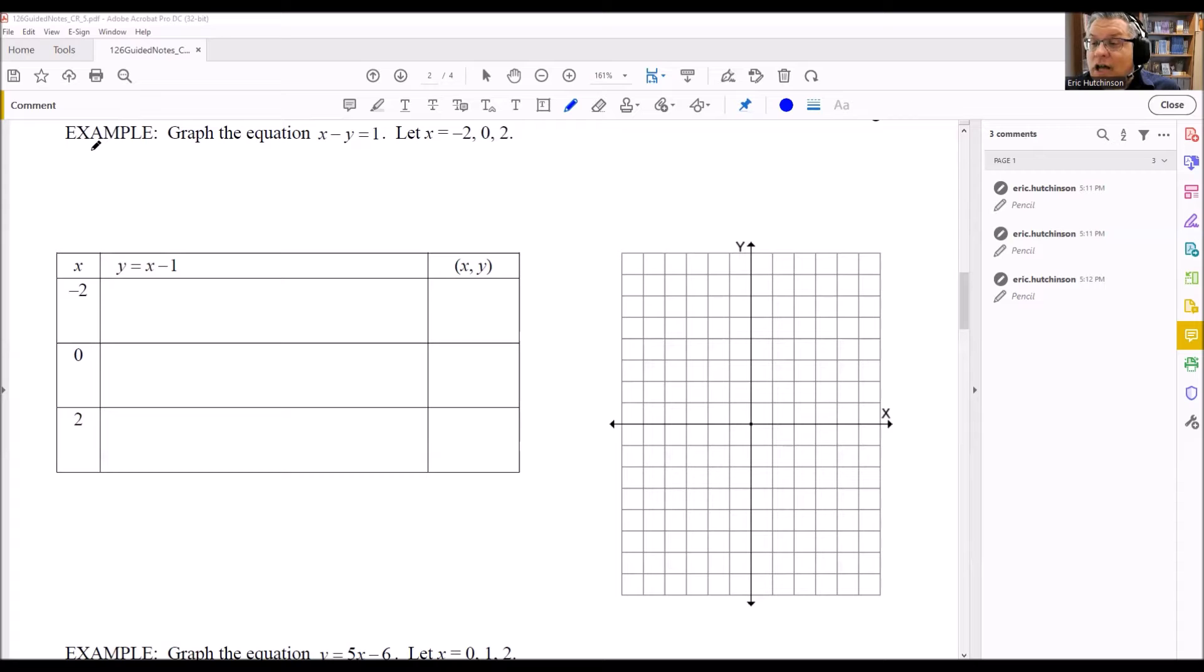Now for something like this, x minus y equals 1, it's always better if it's solved for y because it'll make the table easier. If we solve for y in the beginning, then we can just plug the x values in and get the answer there. So I'm going to subtract x from both sides and get negative y equals negative x plus 1. Now I want to divide everything by negative 1, and I get positive y equals positive x minus 1. That would be the equation solved for y.